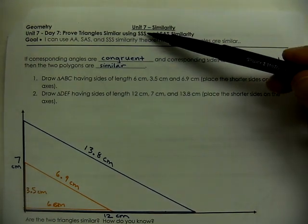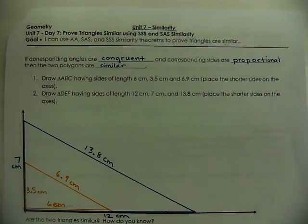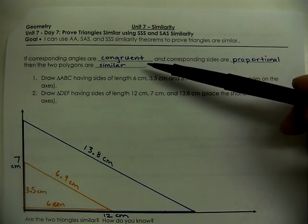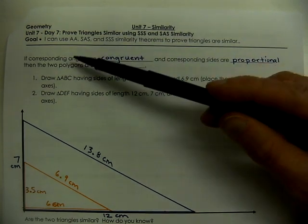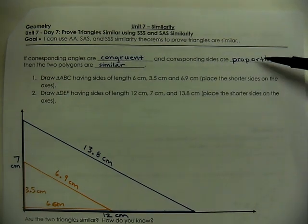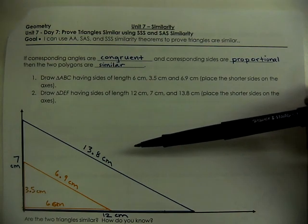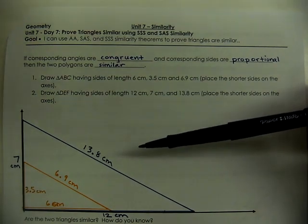We call them the side-side-side similarity and the side-angle-side similarity. As a reminder, for any polygons — not just triangles — you really have to look at each pair of corresponding angles to show they're congruent, and each pair of corresponding sides to show they are proportional, to know those polygons are similar. But these shortcuts only work for triangles, not for any other quadrilateral or polygon.